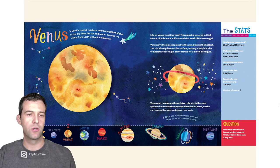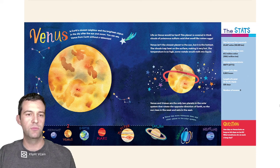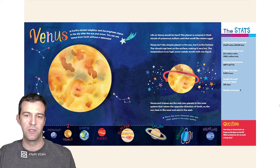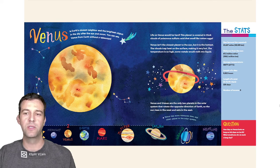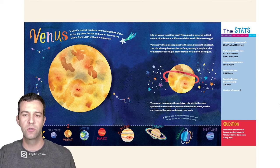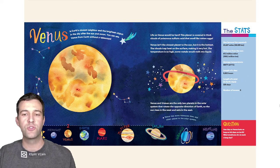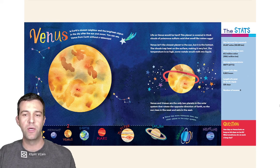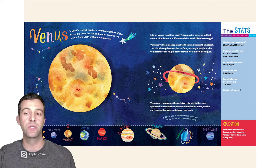Venus is Earth's closest neighbor and the brightest object in the sky after the Sun and Moon. You can see Venus from Earth without a telescope. Life on Venus would be hard. This planet is covered in thick clouds of poisonous sulfuric acid that smells like rotten eggs. Venus isn't the closest planet to the Sun, but it is the hottest. The clouds trap heat on the surface, making it very hot. The temperature is so high, some metals would melt into liquid.